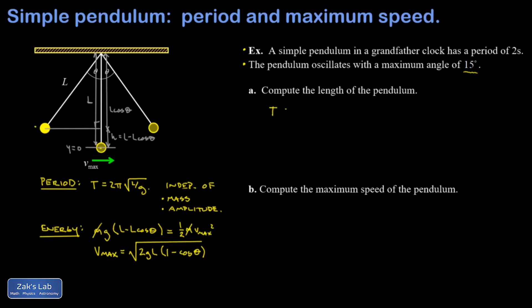I'm going to divide by 2π on both sides, and then square the result. That gives me L over G. And then I can solve for L. It's G times the quantity T over 2π, all squared.